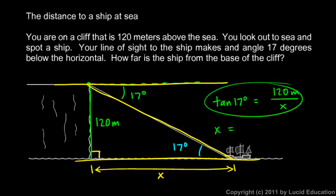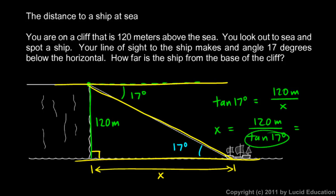Rearranging this algebraically gives me x is 120 meters over the tangent of 17 degrees. And I do that on the calculator. The calculator will give me this number. So 120 meters divided by that comes out to 392.5 meters. 392.5 meters is the answer.